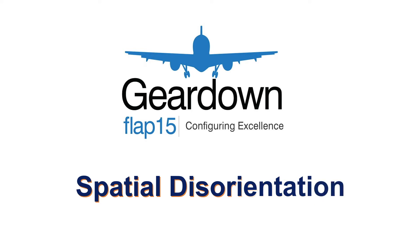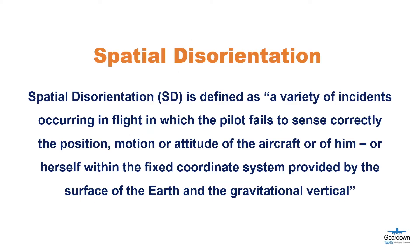Let's first define spatial disorientation. It is defined as a variety of incidences occurring in flight in which the pilot fails to sense correctly the position, motion, or attitude of the aircraft, or of themselves, within the fixed coordinate system provided by the surface of the Earth and the gravitational vertical.